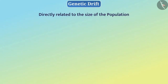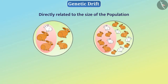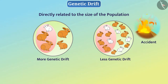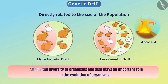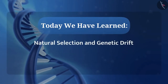Genetic drift is directly related to the size of the population. If the size of the population is small, then the genetic drift will be more. Therefore, the number of organisms must be very large in a population, such that there will be more chances of survival from sudden accidents, and thus there will not be much effect on the frequency of genes — i.e., there will be no genetic drift. So, genetic drift affects the diversity of organisms and also plays an important role in the evolution of organisms. Today we have learnt about natural selection and genetic drift.